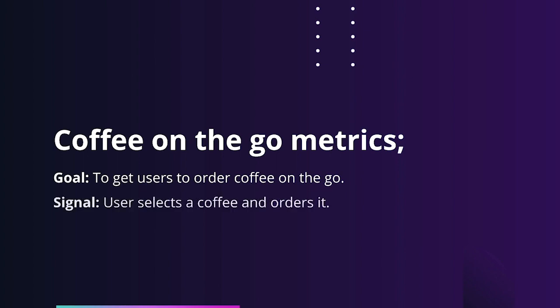The second thing is what's the signal? Well, the user selects a coffee and then orders it — that's quite a clear signal that they've actually completed the task. And how do we know that it's been improved upon? Well, the number of completed orders. A user could select a coffee but not complete the order, so then that would be a failure in the prototype.